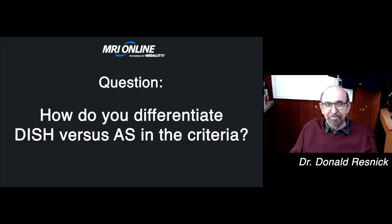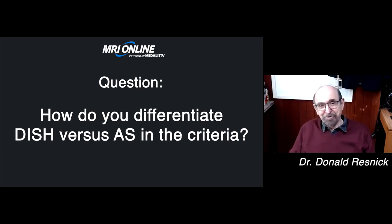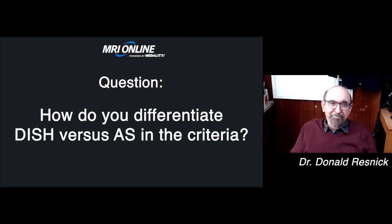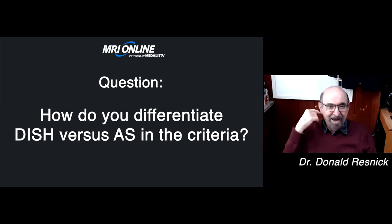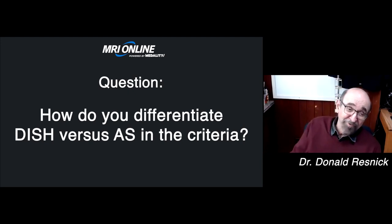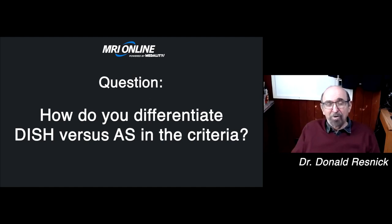How do you differentiate DISH versus AS in the criteria? It's interesting — there have been many articles written about DISH since we used that term back in the 1970s. We came up with some criteria that people have debated since. One of them was involvement of four contiguous vertebral bodies, which was a purely arbitrary finding. We also emphasized that you didn't see intraarticular bone fusion in DISH as opposed to ankylosing spondylitis.